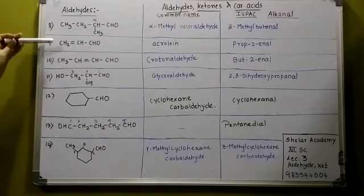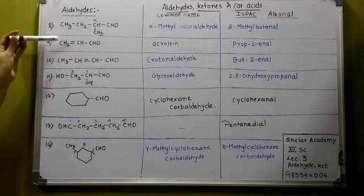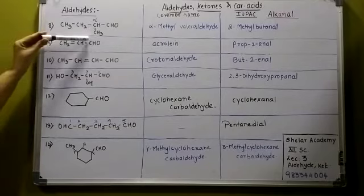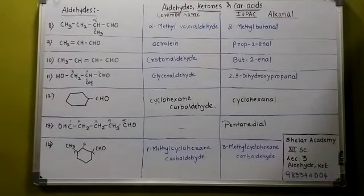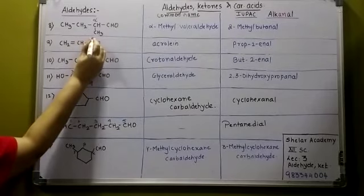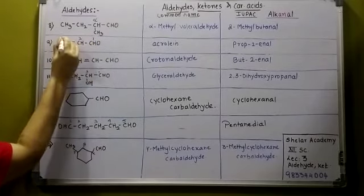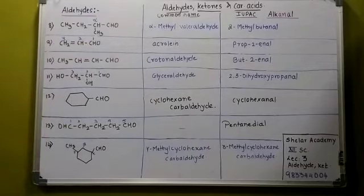Now, the common name of this compound is acrolein. The IUPAC name: counting 1, 2, 3 — it is prop-2-en-al. No need to explain this further.